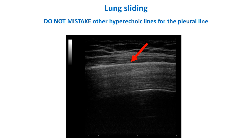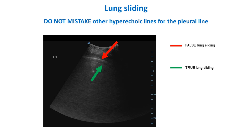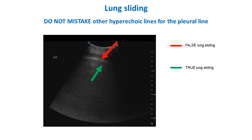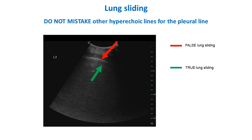Here is another example where the red arrow indicates a hyperechoic horizontal line which is not the pleural line — it may be a muscular fascia. The real pleural line is underneath, not clearly visible, indicated by the green arrow. What we have to consider is not just a general movement but the sliding of the pleural line compared to the structures above.